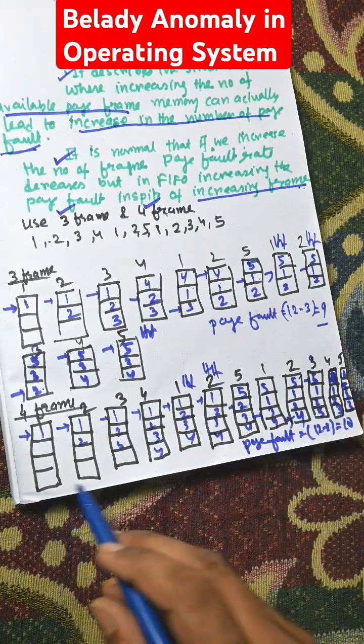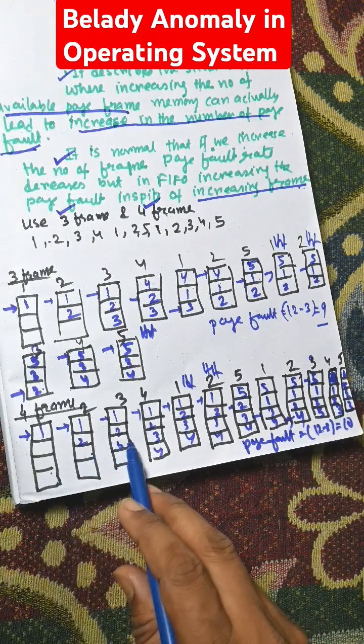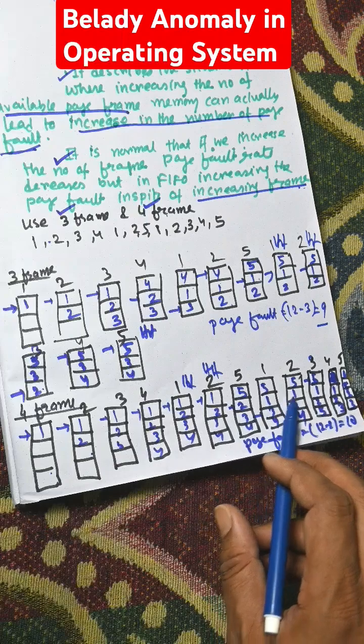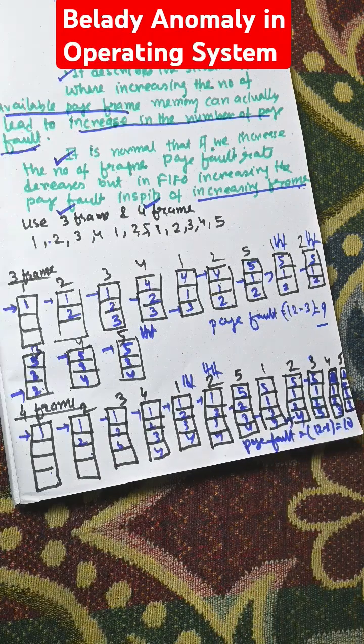So the number of page faults with 4 frames is 10.